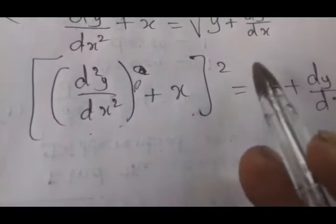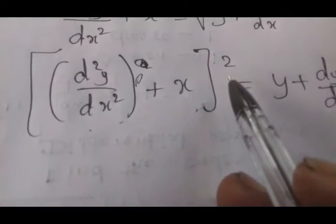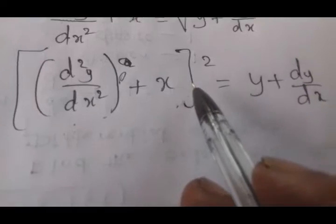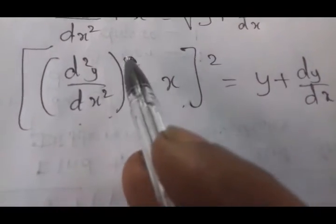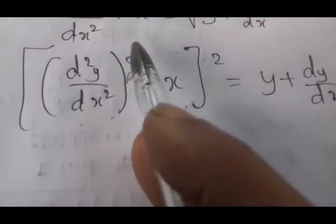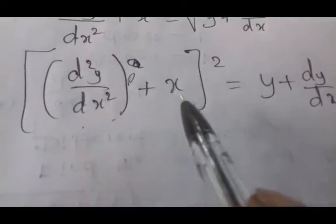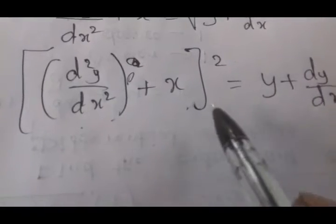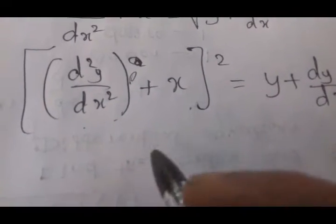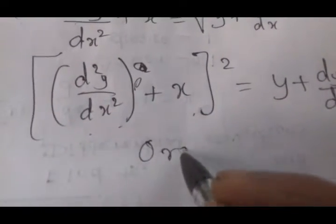You'd understand: x equals dy/dx. The order would be 2 — that's the maximum order. Then expand using A plus B whole square. The maximum order of dy/dx gives the degree.